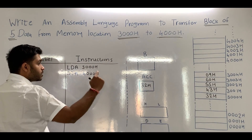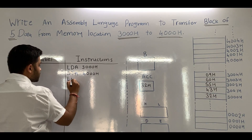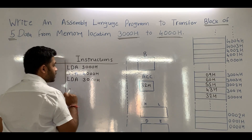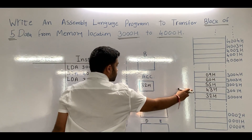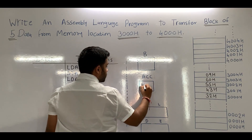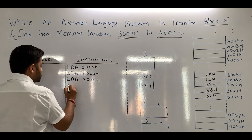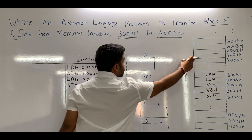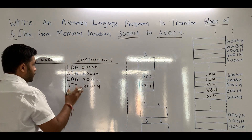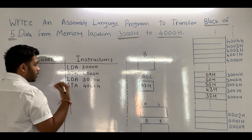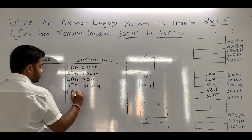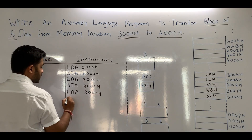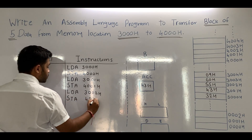After that, we have to move data from 3001 to 4001. So we will use again the same instruction LDA 3001H. When we write LDA 3001H, the data from 3001 will be transferred to the accumulator — so in the accumulator we will get 43H. Then we will store the data to 4001H, so this 43H will be stored to 4001H. Similarly, we write LDA 3002H and STA 4002H, and so on for the remaining addresses.